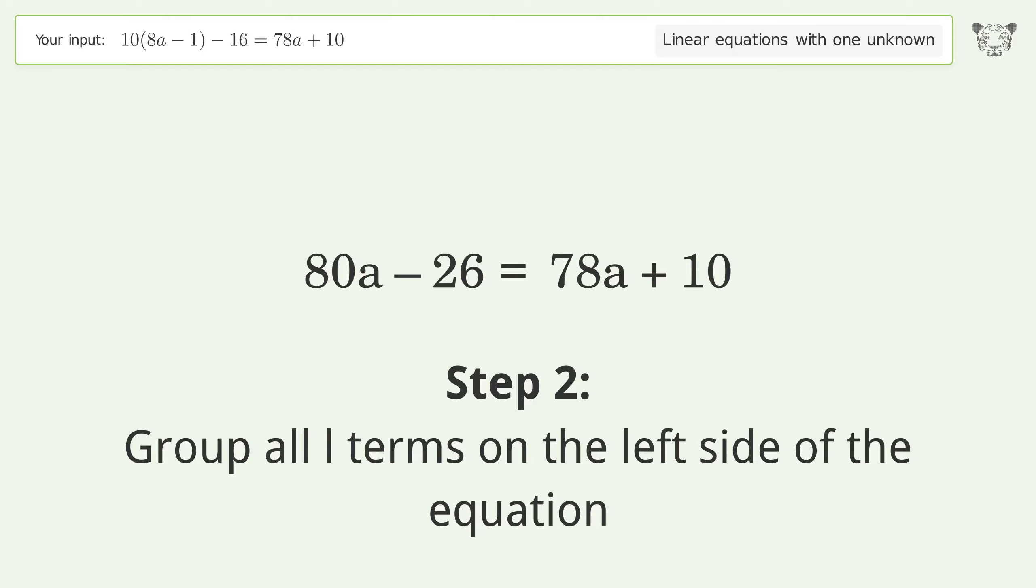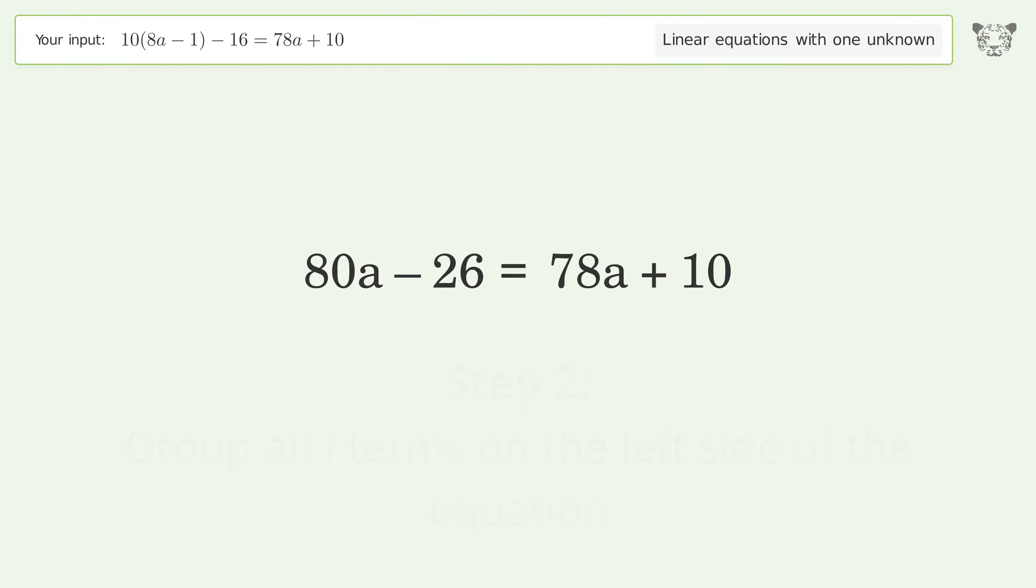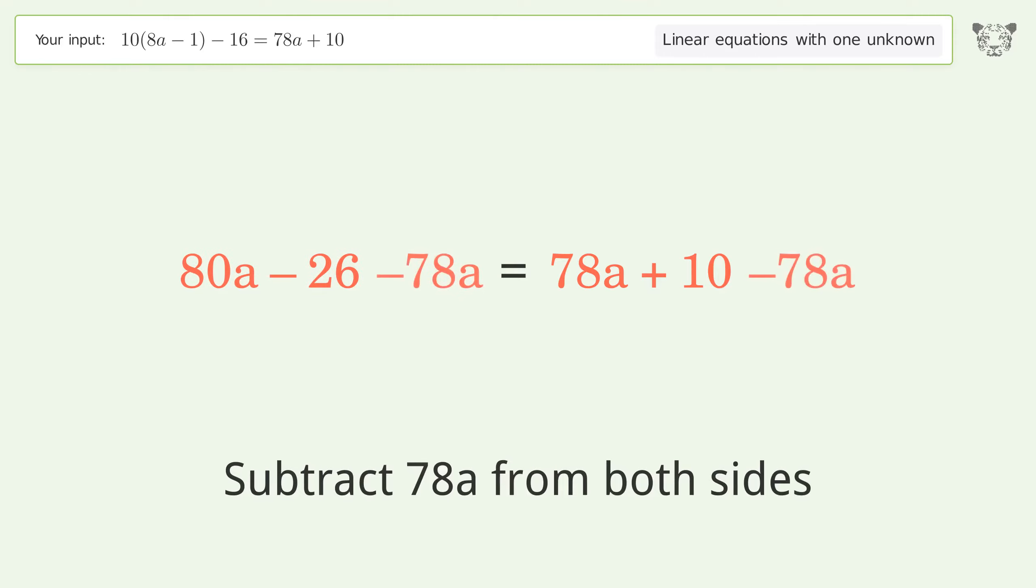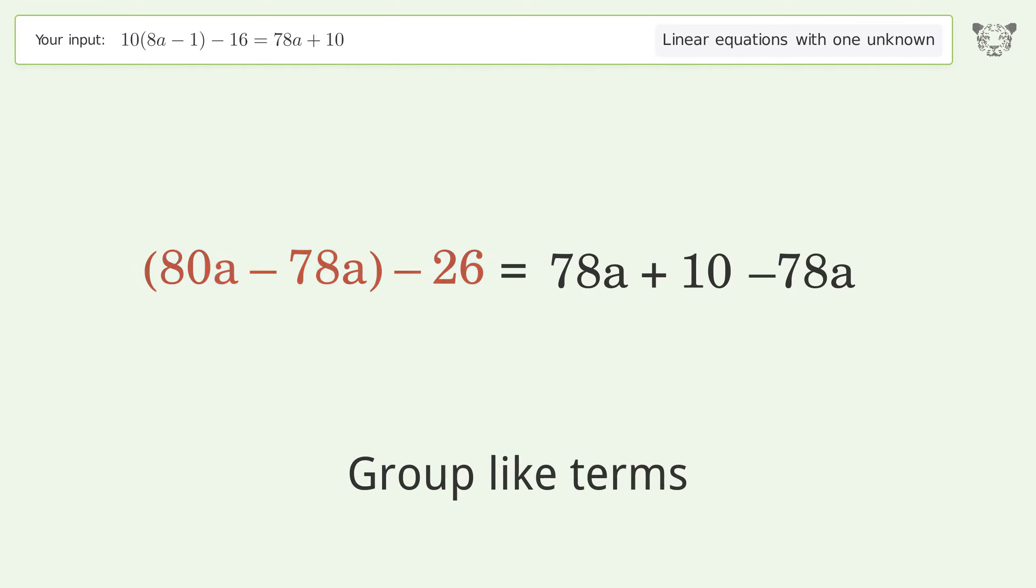Group all l terms on the left side of the equation. Subtract 78a from both sides. Group like terms. Simplify the arithmetic.